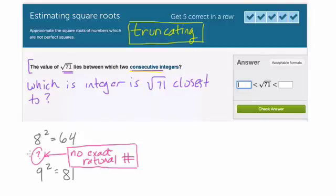And in fact, it's very easy to figure out which integer it's closest to. Here's the reasoning. When you look at 9 squared into 81, and you subtract 71 from that, you could say, well, the difference is 10. So that means that it's 10 away from what you're trying to get.